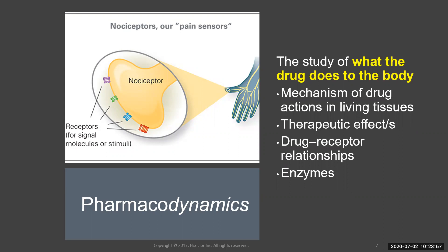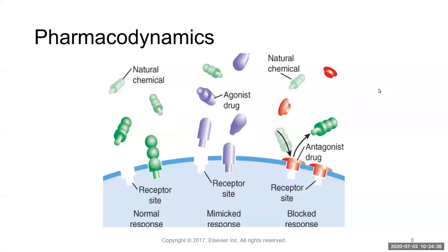For example, you take acetaminophen to help your headache — but how does that actually happen? This is where we look at mechanism of action: how does that drug work in living tissue? What are the desired therapeutic effects? What is the drug-receptor relationship and the involvement of enzymes? Let's explore the drug-receptor relationship as part of pharmacodynamics. Don't be overwhelmed — let's take it one section at a time.